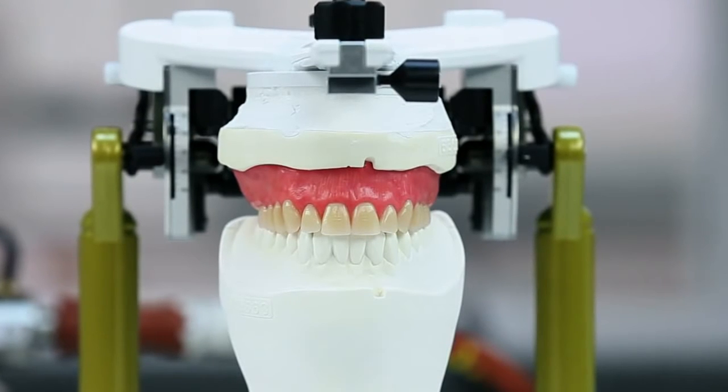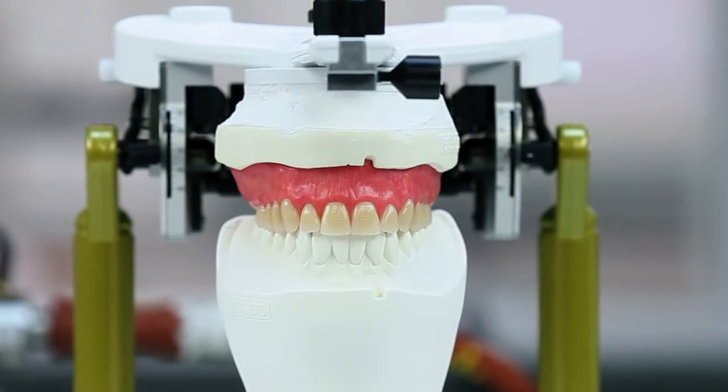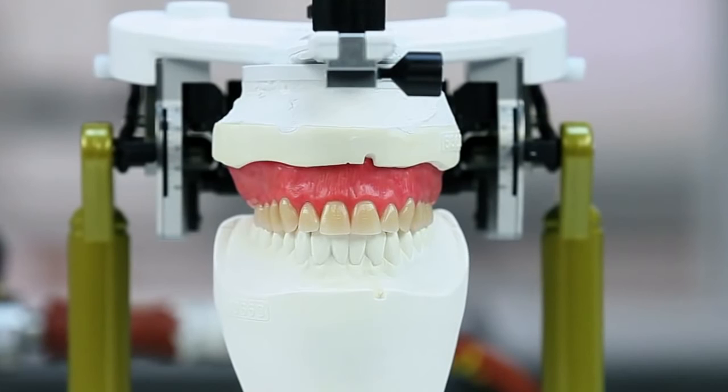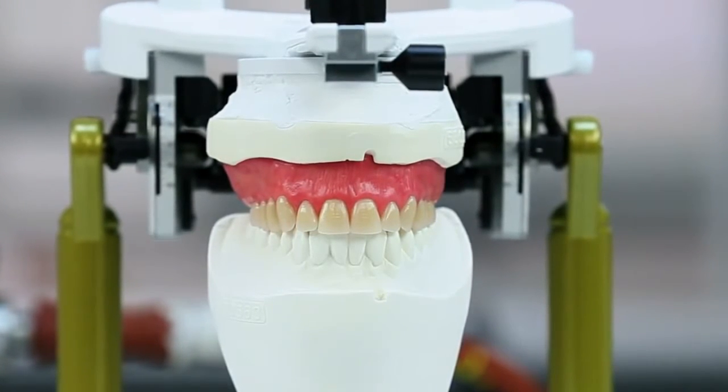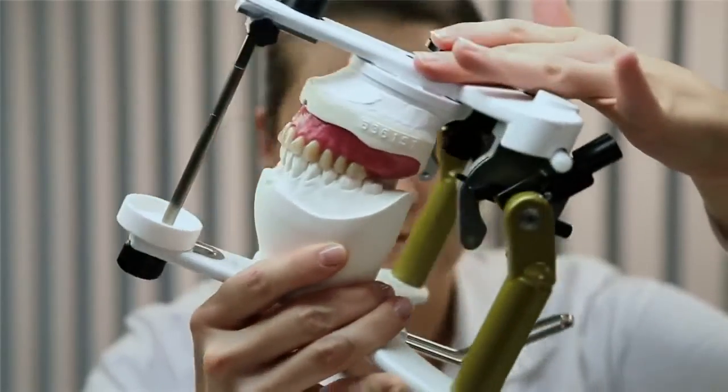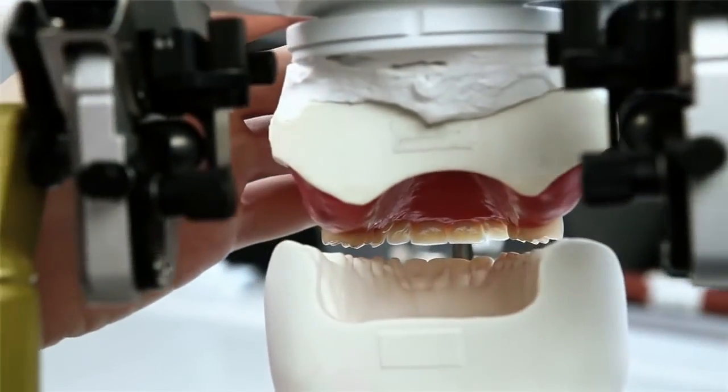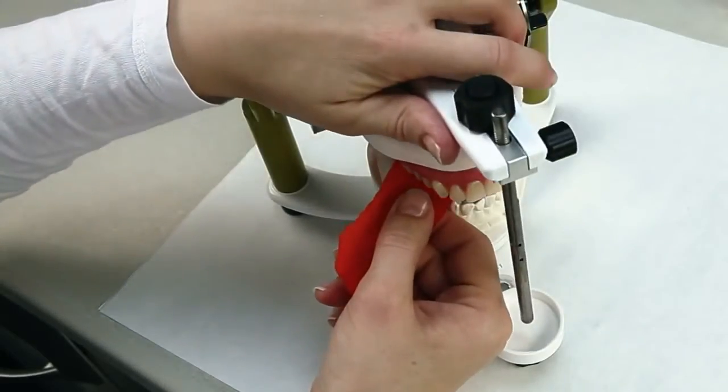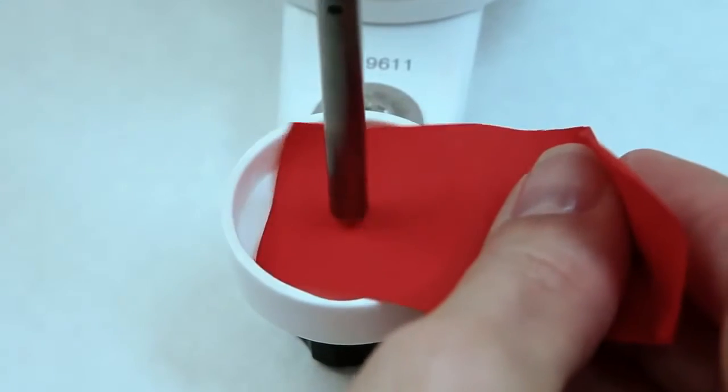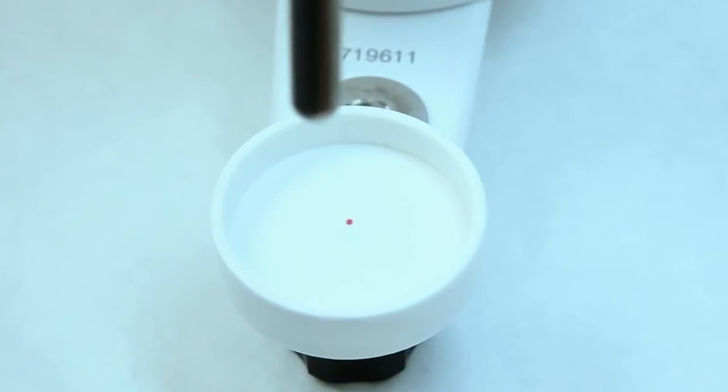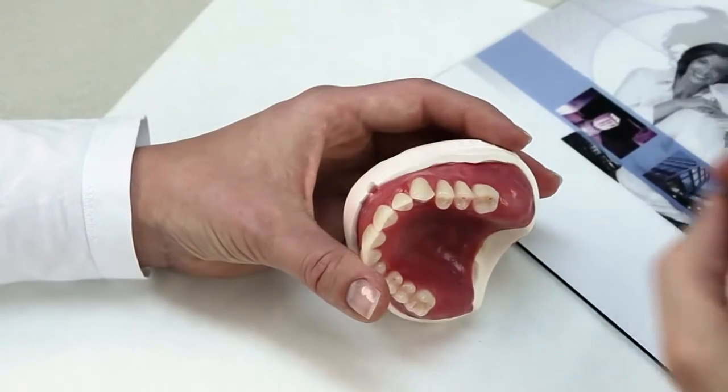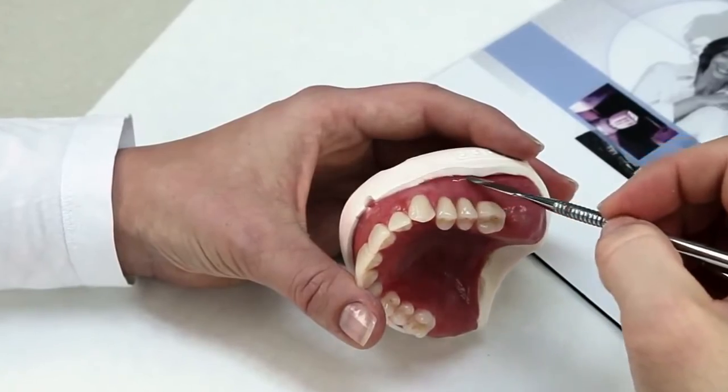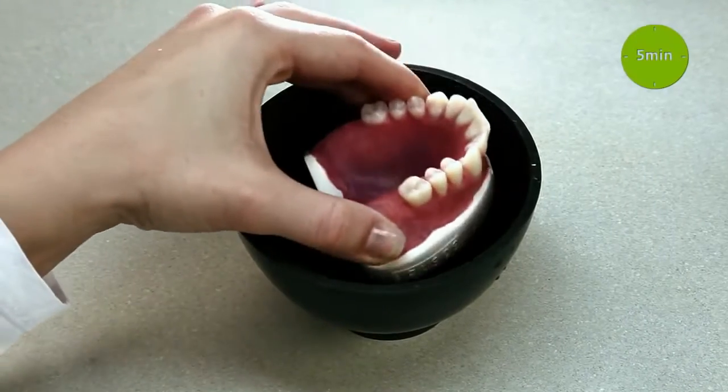The anatomic contouring should correspond with the future completed dentures to as large an extent as possible. This will help you save time during subsequent finishing. Check the wax up in the articulator after try-in. The contact points in the occlusion should already be established at this point. At the same time, the support pin should contact the tray. After that, secure the denture body with wax and store the model in a water bath for 5 minutes.